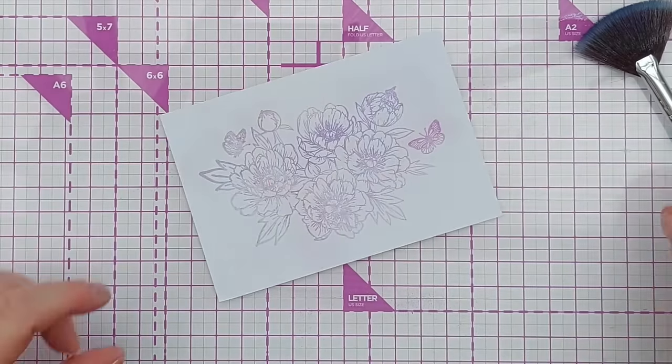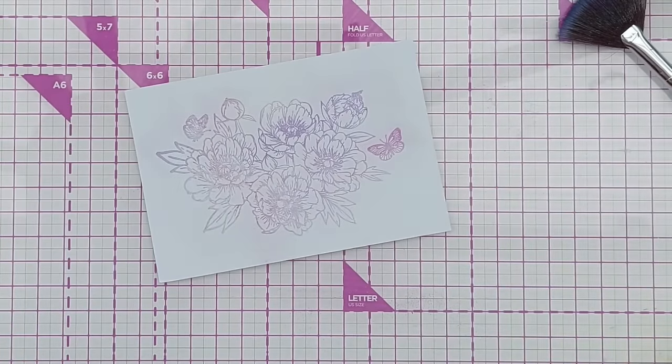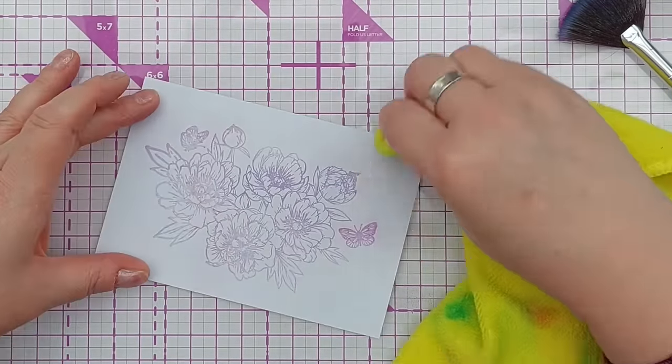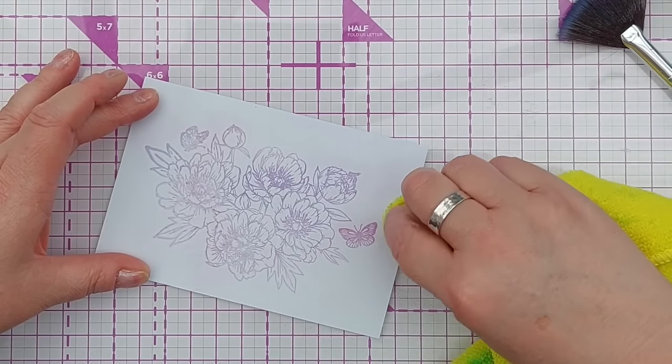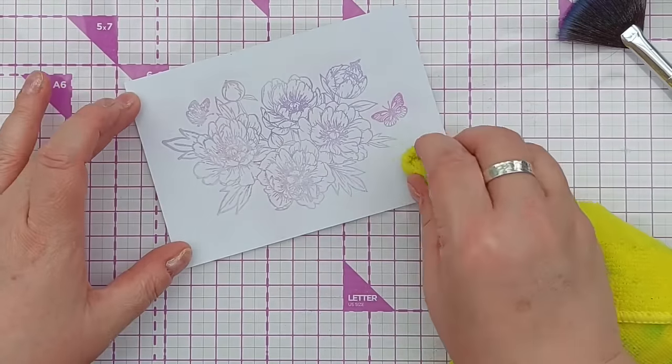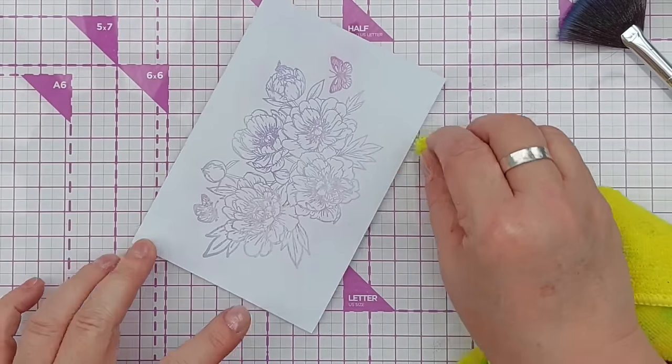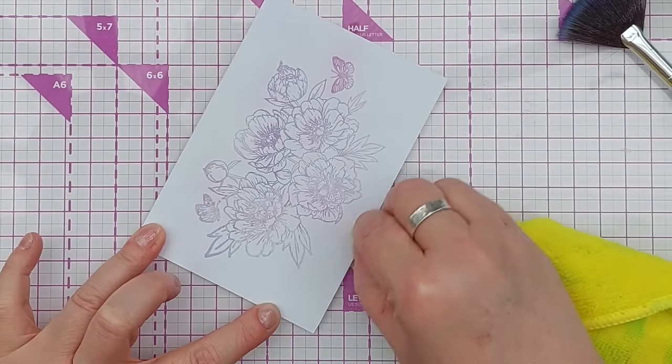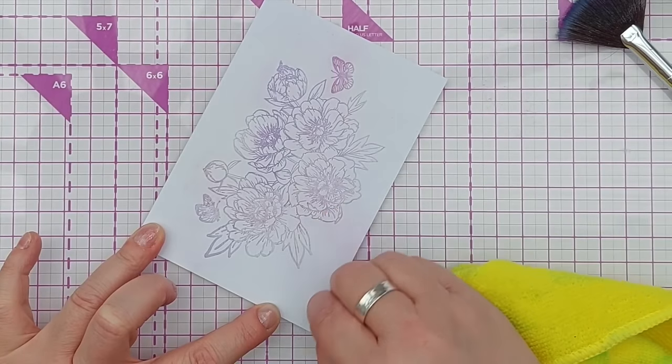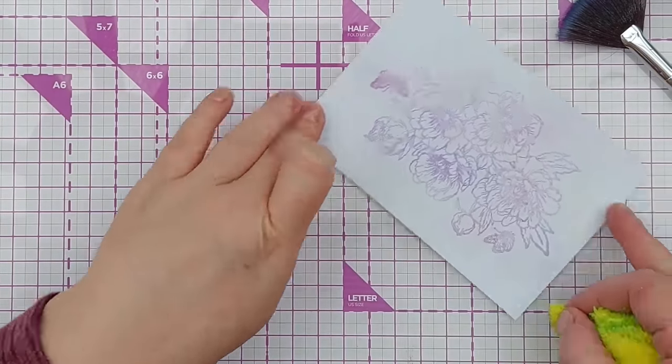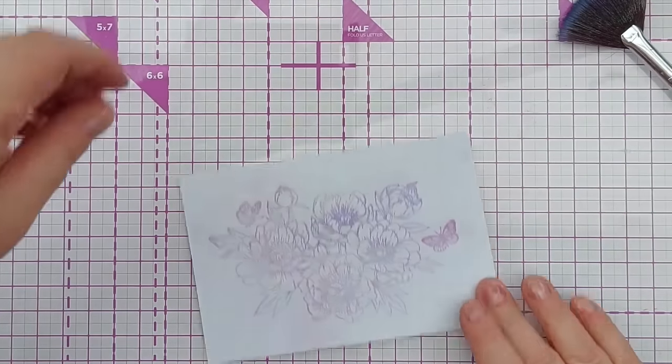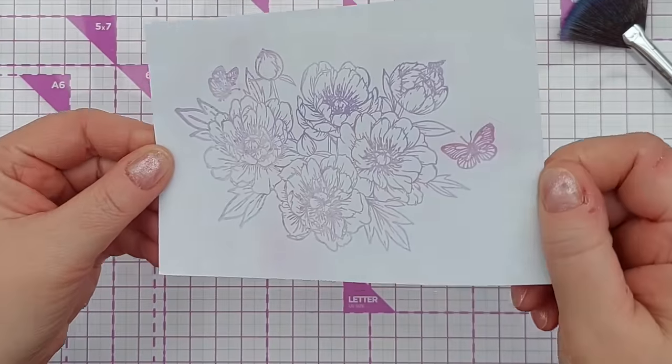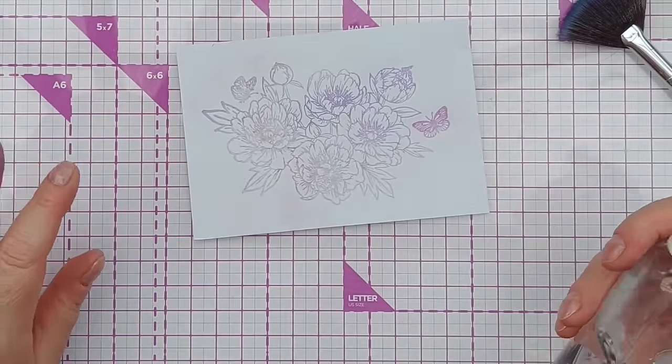And I can, if I'm careful, just take a microfiber cloth. You could use maybe a Q-tip if you want to get into the nooks and crannies. You can brush away any residual pigment, and there you have a lovely shimmery stamped image.